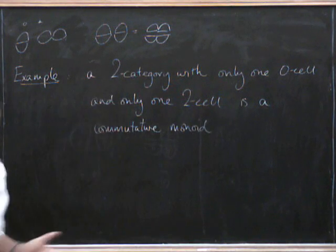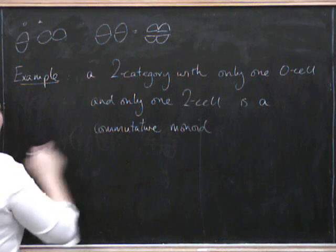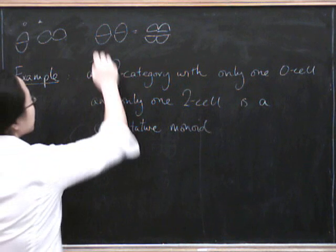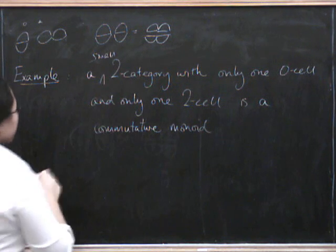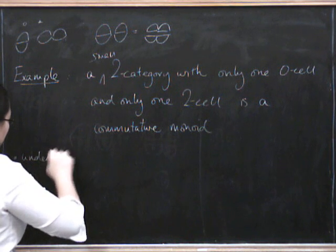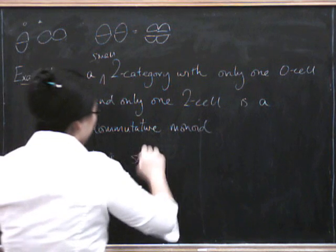What's a commutative monoid? It's a set equipped with a commutative operation. The underlying set we use is the set of 2-cells - this needs to be small.